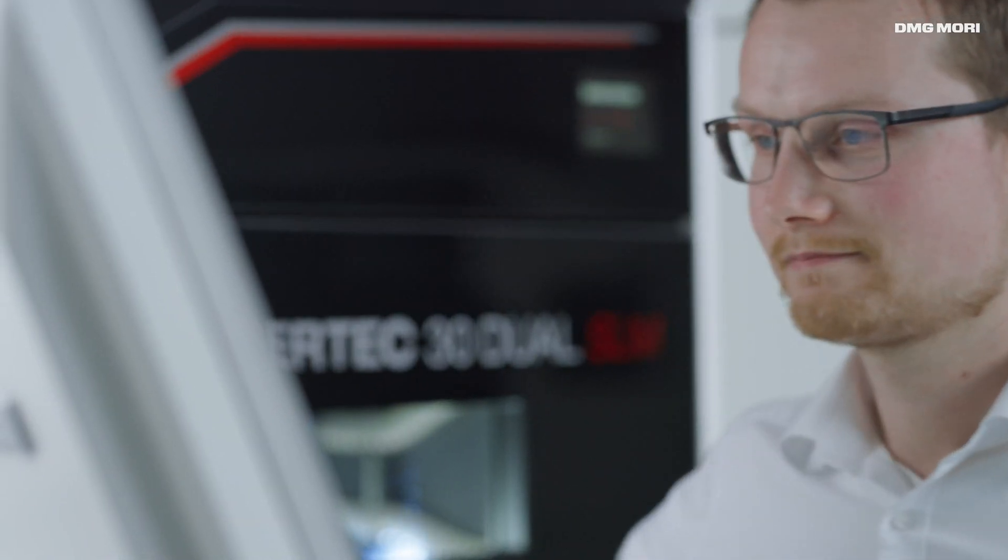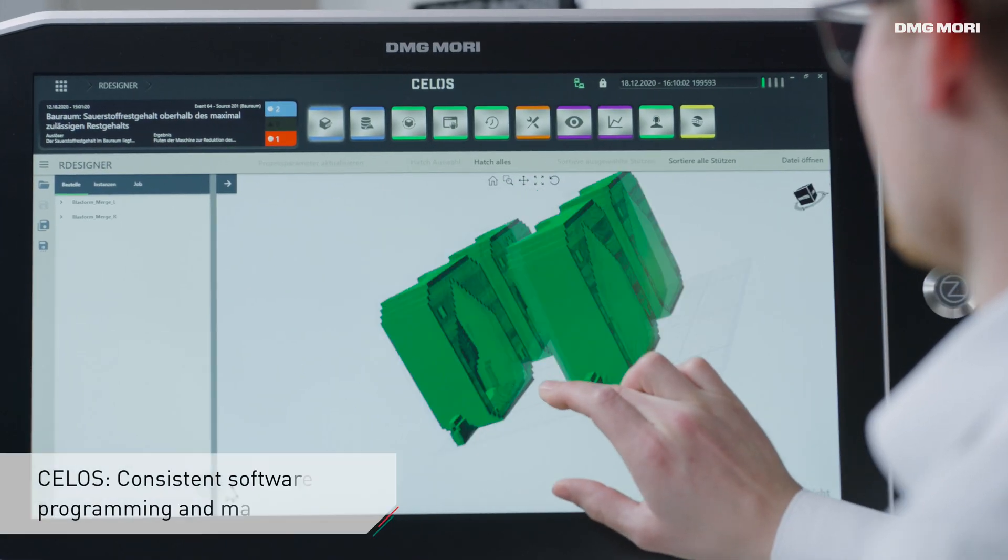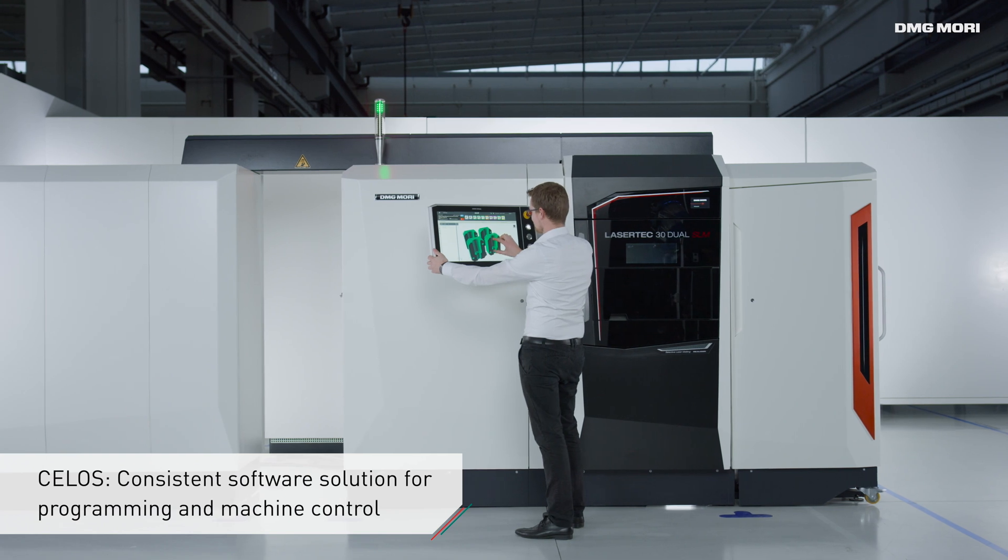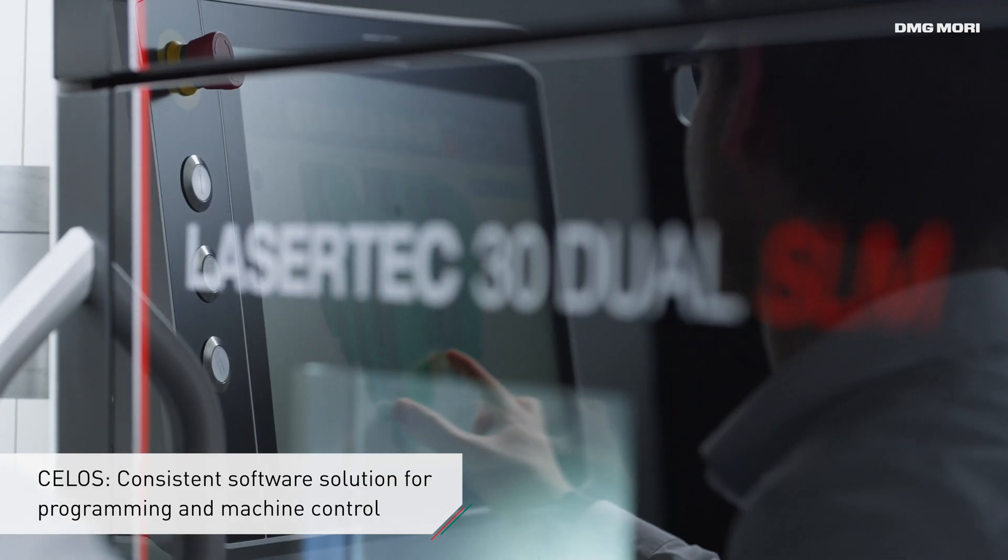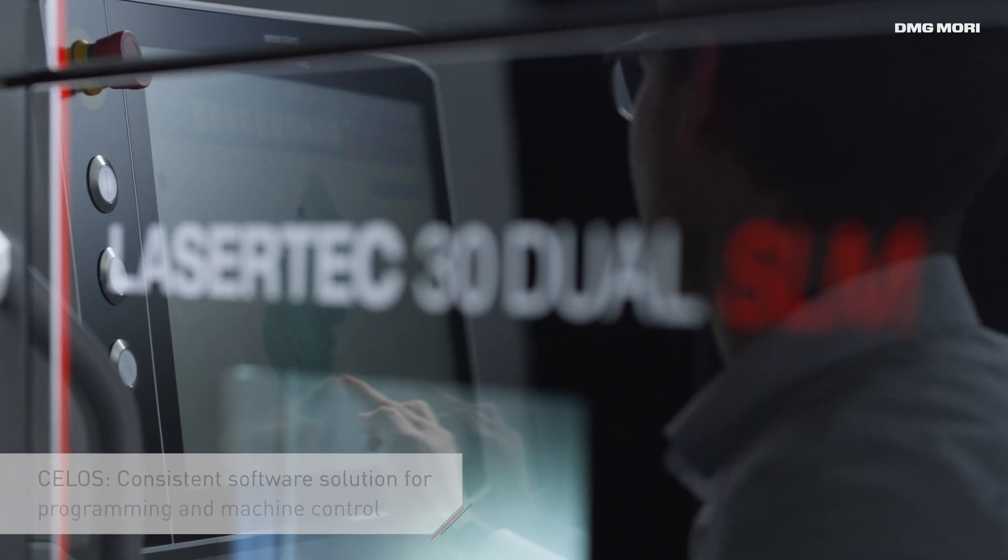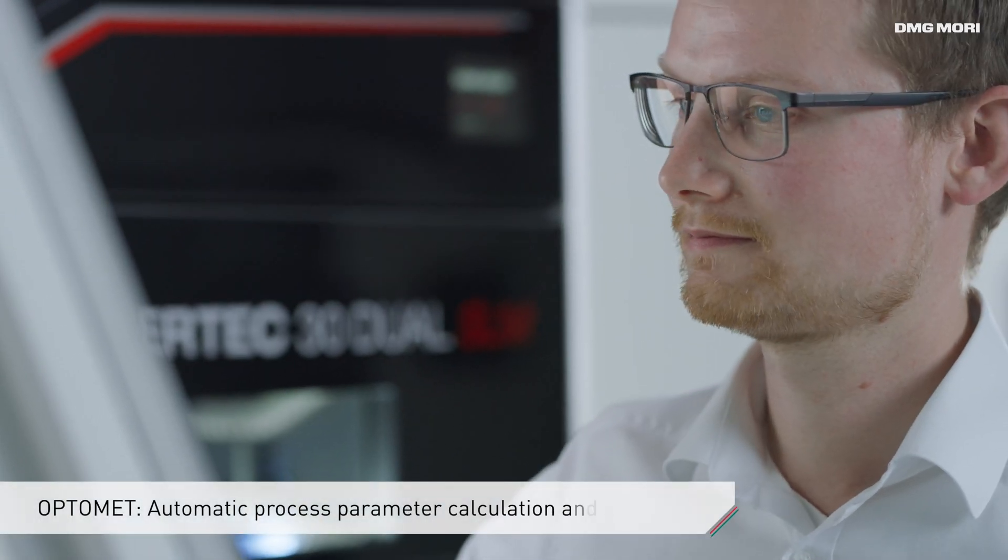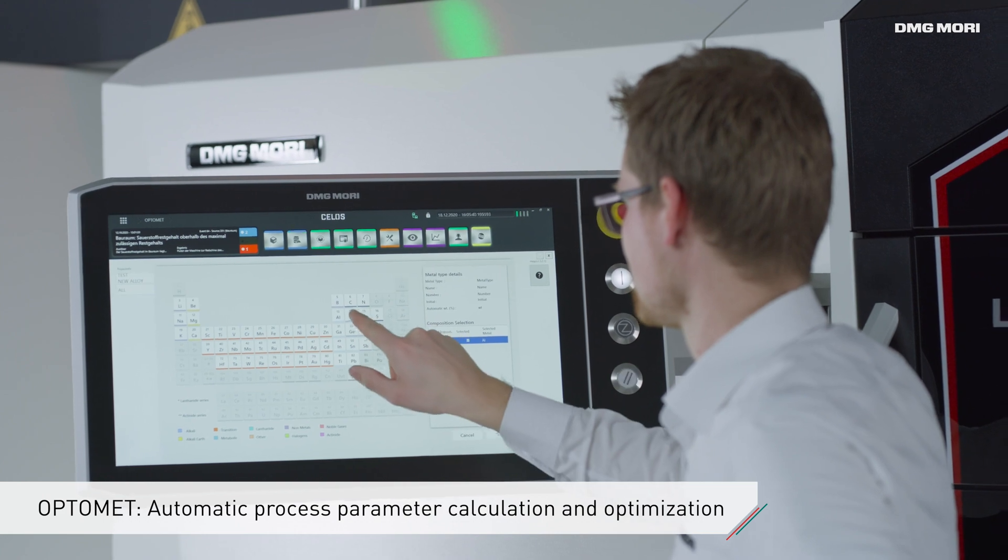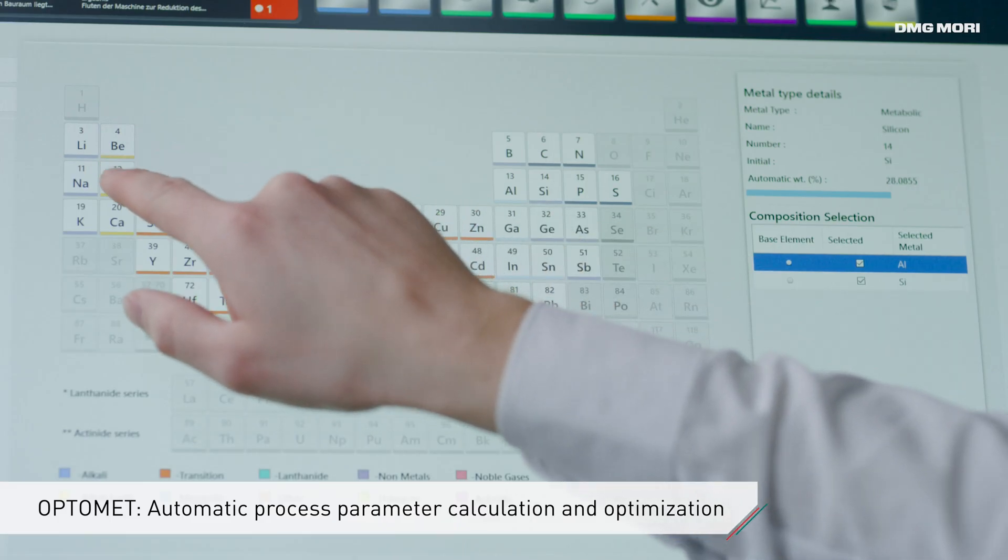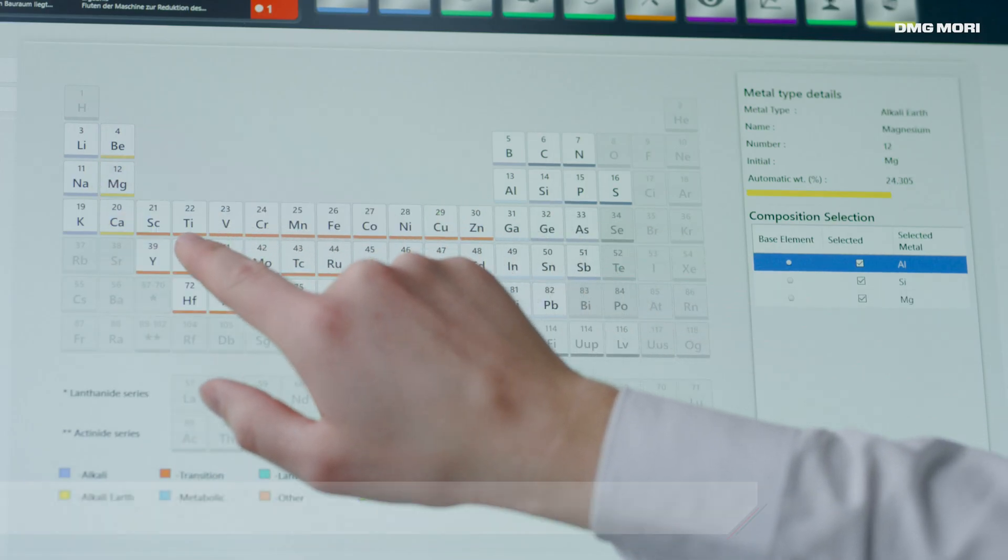The app-based user interface Celos offers a consistent software solution covering everything from CAM programming and process parameter calculation through to machine control tasks. The automatic calculation of process parameters with OptiMet makes it possible to create new parameter sets within minutes.